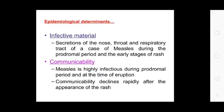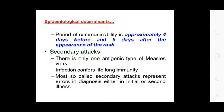Communicability: measles is highly infectious during the prodromal period and the time of eruption. Communicability declines after the appearance of the rash. The period of communicability is approximately four days before and five days after the appearance of the rash. There is only one antigenic type of measles virus; infection confers life-long immunity. Most so-called secondary attacks represent errors in diagnosis.